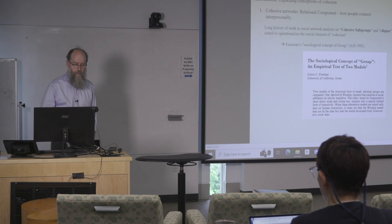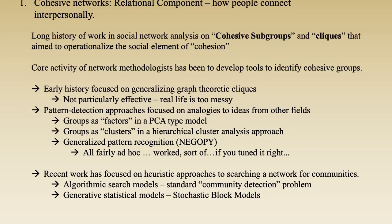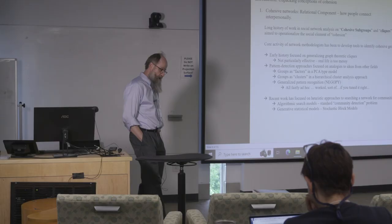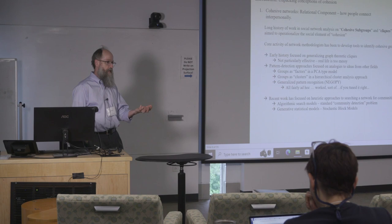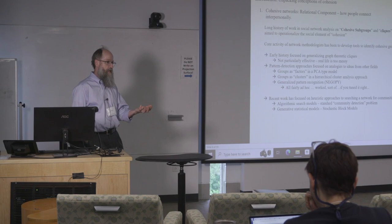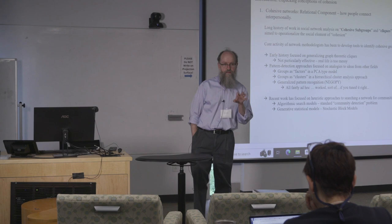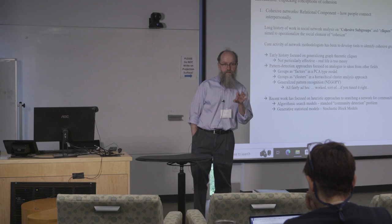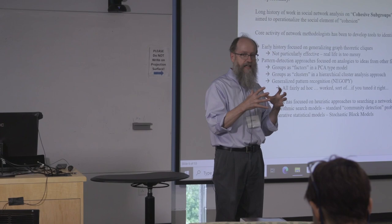I recommend looking at a wonderful paper by Lynn Freeman on the sociological concept of group, working with transitivity and groupiness from Mark Granovetter's work. There's jargon to get past: in the literature there's a distinction between cliques, cohesive groups, and communities. In this room, 'clique' means something specific — a subgraph where each person is tied to every other person, a mathematically dense group with density equal to one.